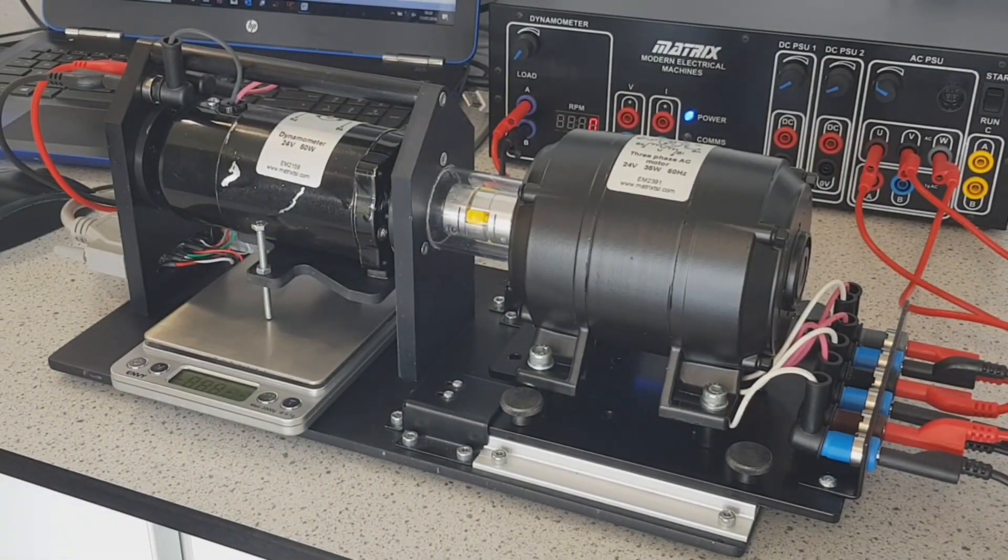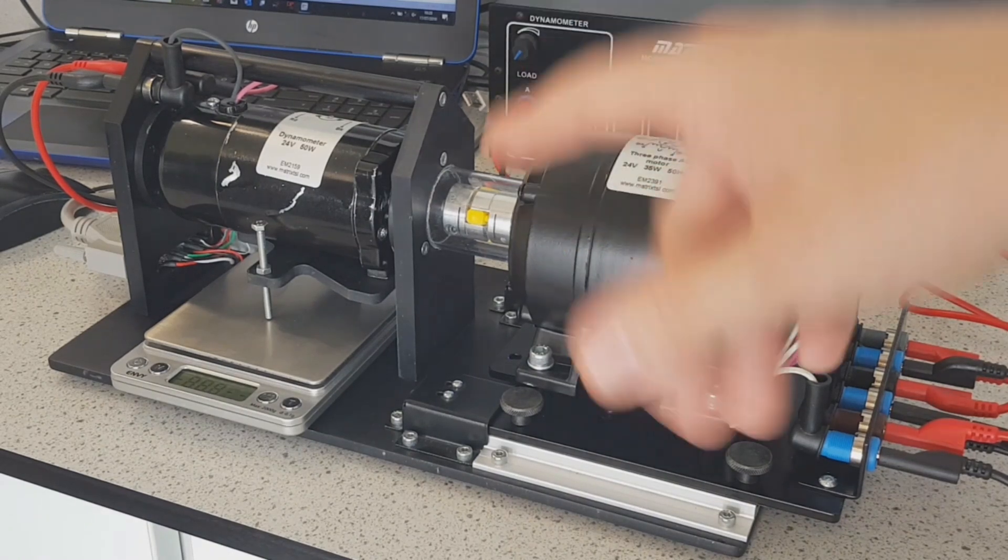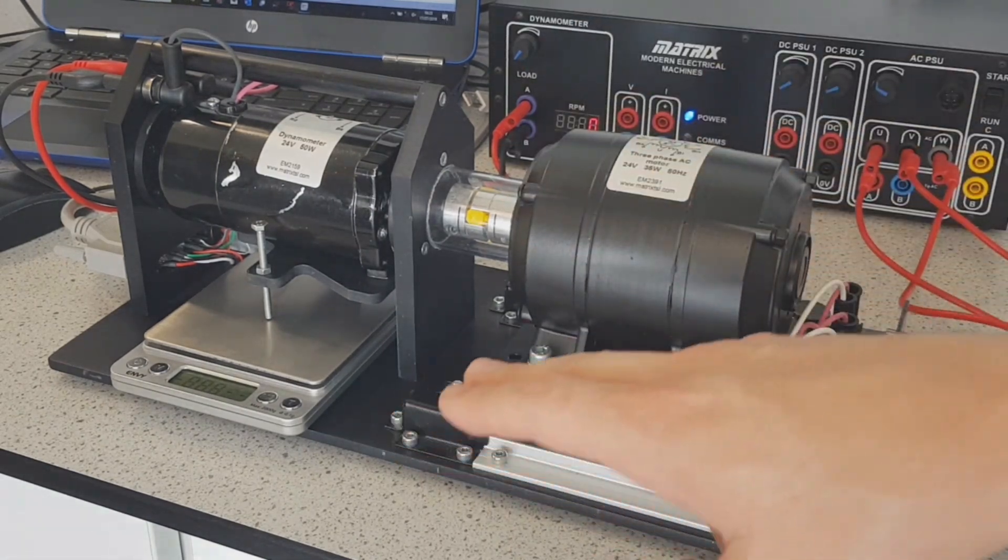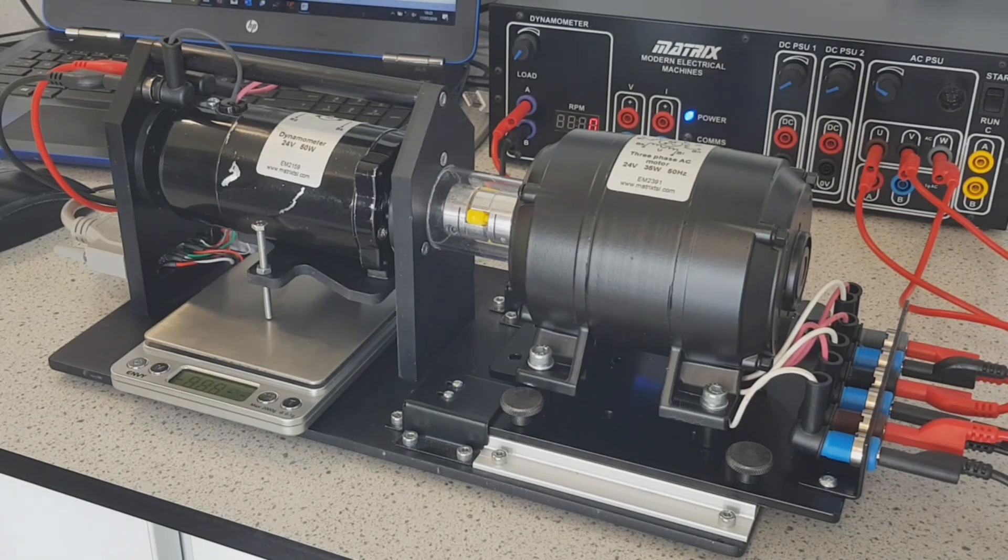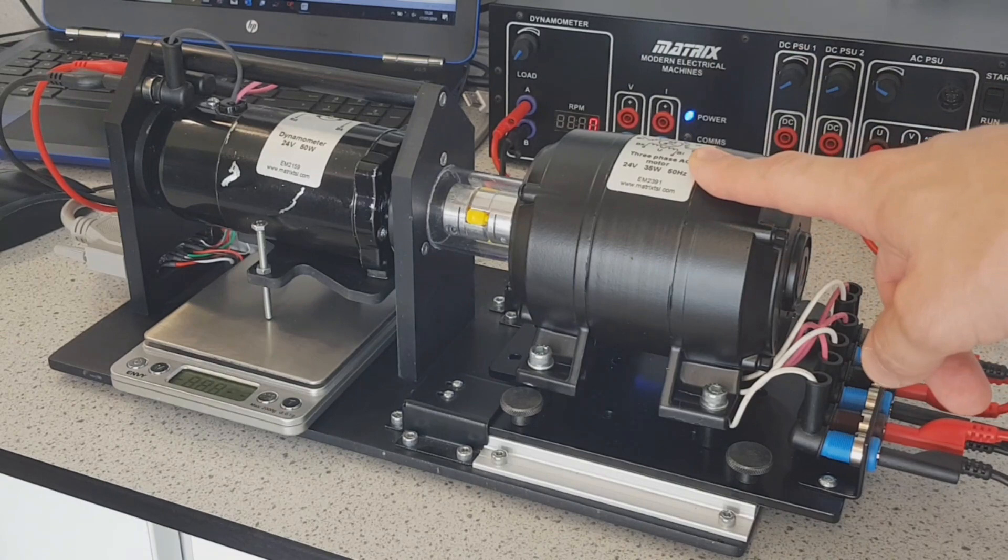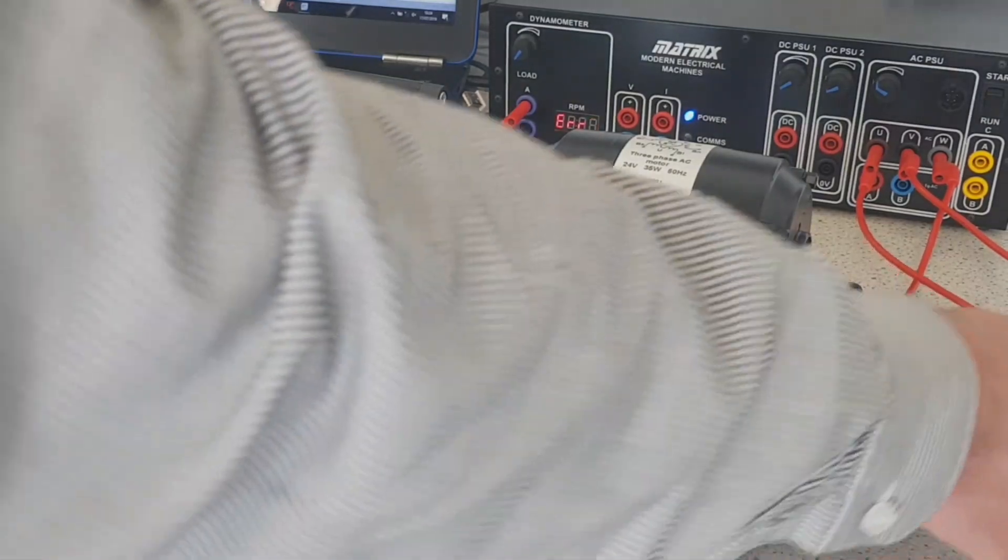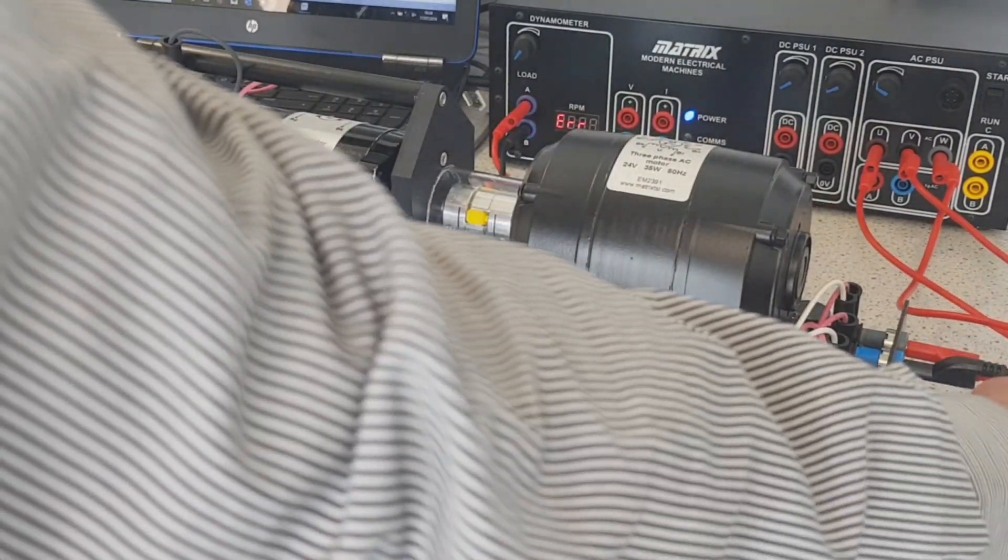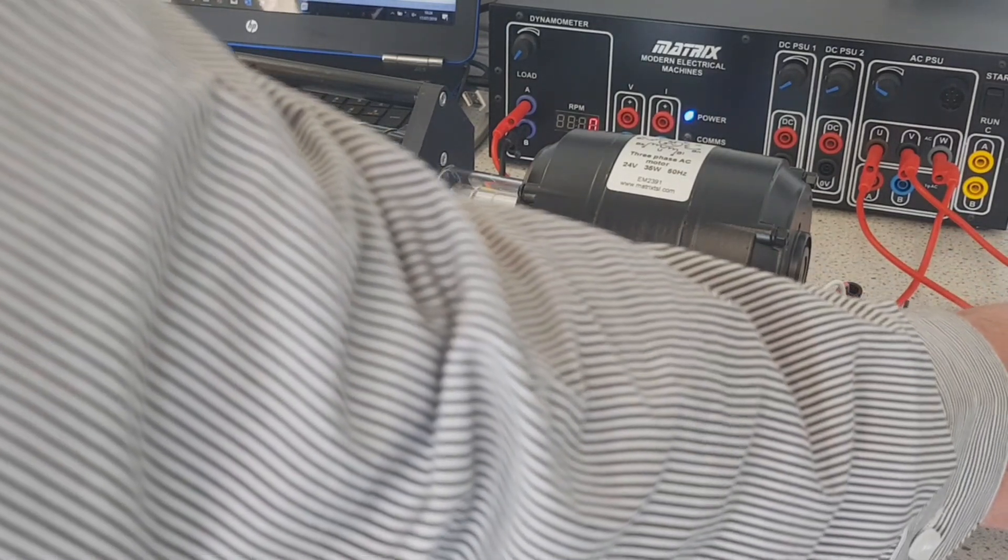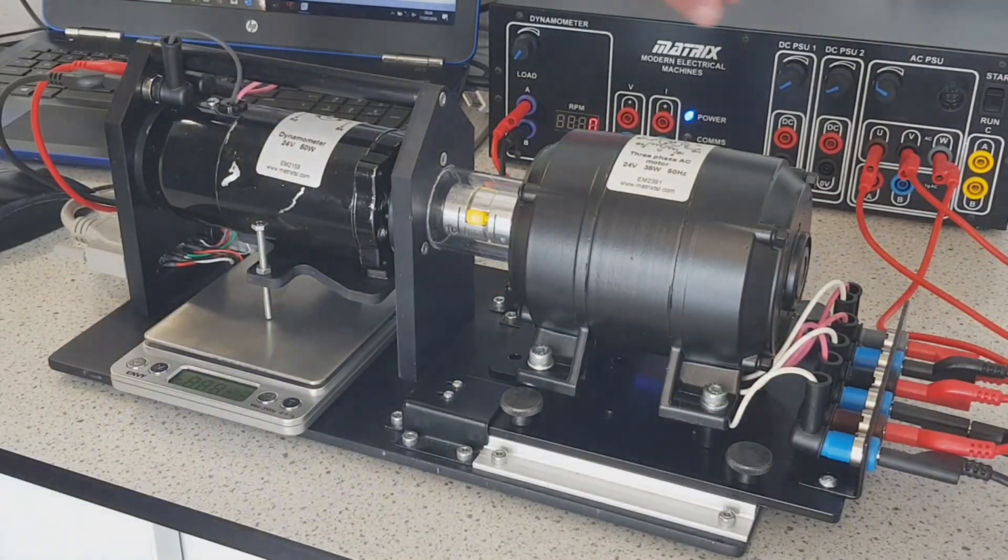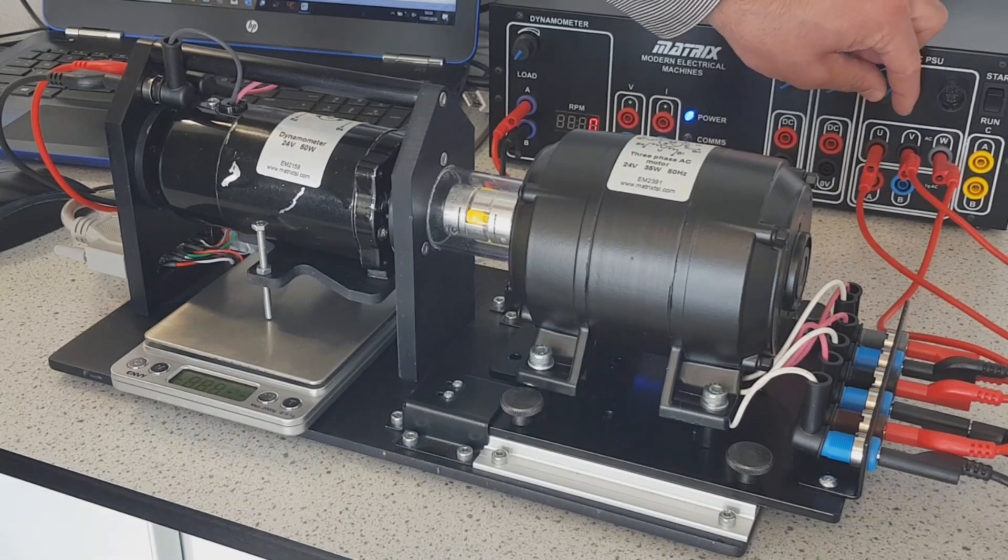So the dynamometer here has a nice function where we can actually use it to calculate what the torque being generated by the motor is. But before we get to that, we need to reverse the direction of the motor in order to get that to work. I'm sure that all of our people watching will know exactly how to reverse the direction on a three phase motor, but would you like to just remind us? You have to swap the phases over. So we swap over any two phases? So I'm going to just swap the brown and black phase there.